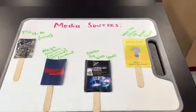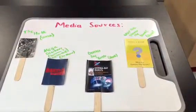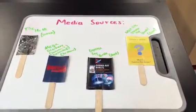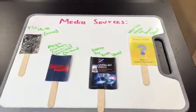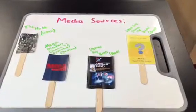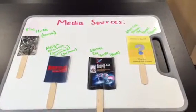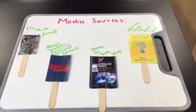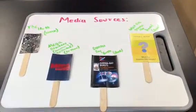Media sources are The Hawk, which is a comic; Mega Disaster Season 2 Episode 3, which is a TV show; and Gamma Ray Burst and What is a Gamma Ray Burst, which are both books.